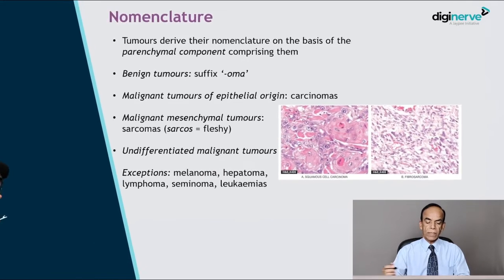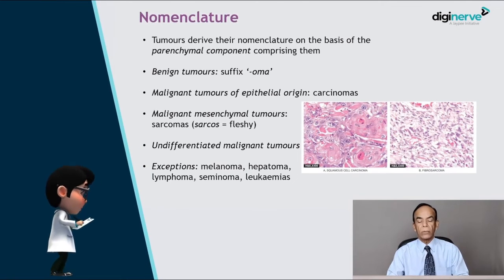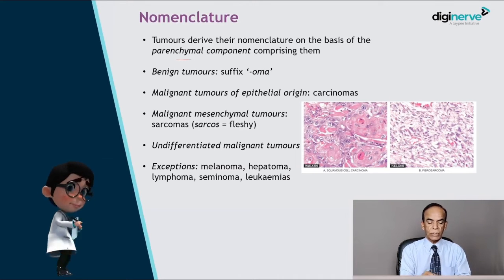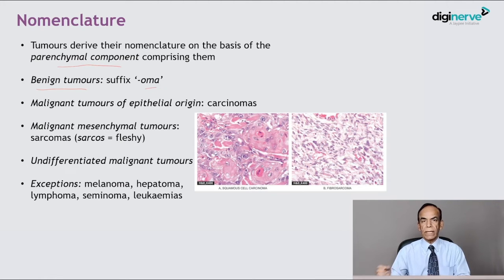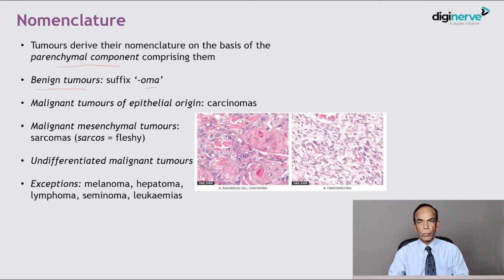Tumours derive their nomenclature on the basis of the parenchyma cells that comprise them. For benign tumours, the term used is the cell of origin followed by OMA. For example, a tumour arising from fibrous tissue is a fibroma, one from skeletal muscle is a rhabdomyoma, from smooth muscle is a leiomyoma, and from nerve fibre is a neurofibroma.